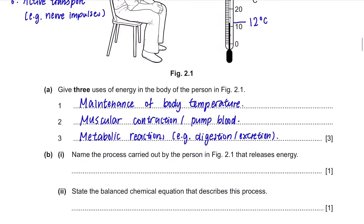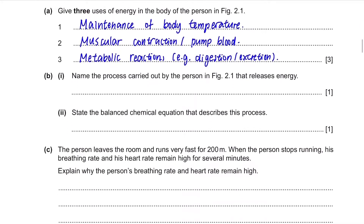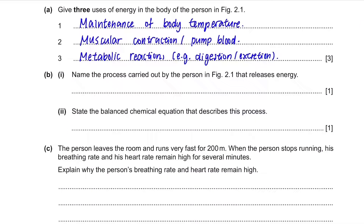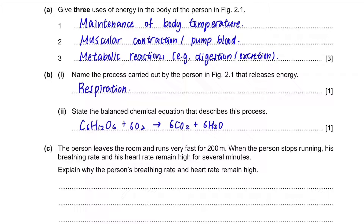Part B: name the process carried out by the person that releases energy. The famous process we learn in biology that releases energy is respiration. Next, state the balanced chemical equation for this process — you are supposed to memorize this equation: C6H12O6 + 6O2 = 6CO2 + 6H2O. For photosynthesis, it is the opposite — the reactants go to the products side and the products to the reactants side.